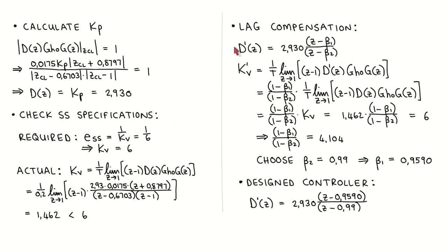We therefore add lag compensation by adding a zero at beta 1 and a pole at beta 2 to the proportional controller, with the pole further to the right than the zero. When we calculate the updated velocity error constant, we see that it is equal to the ratio of 1 minus beta 1 divided by 1 minus beta 2 times the original velocity error constant. The updated velocity error constant should be 6, which means that the ratio should be equal to 4.104. We choose beta 2 to be 0.99 and calculate beta 1 to be 0.959.